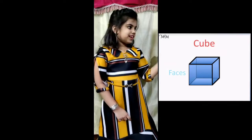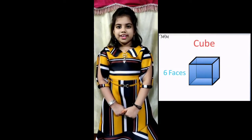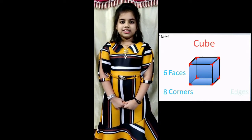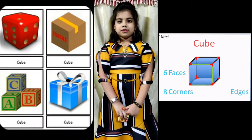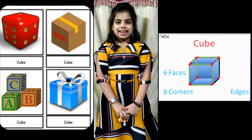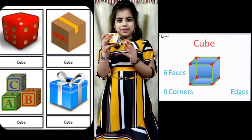The first one is a cube. A cube has 6 faces which are equal squares. It has 8 corners and 12 equal edges. Examples of a cube are a dice and a Rubik's cube.